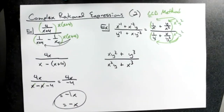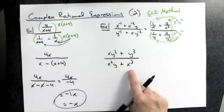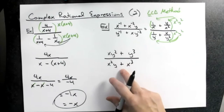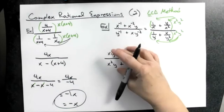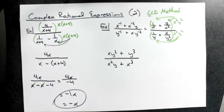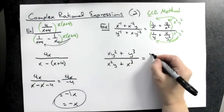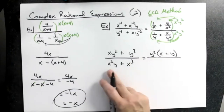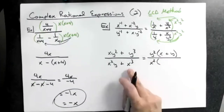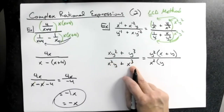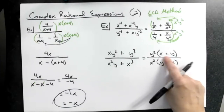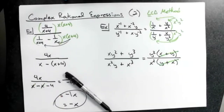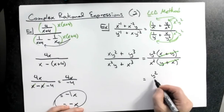Under normal circumstances we would probably stop there, but looking at this, I can factor out something from the top and something from the bottom. In the top, I can factor out y squared — leaving x in the first term and y in the second term. In the bottom, I can factor out x squared — leaving y in the first term and x in the second term. Even though those two binomials are written backwards — x plus y versus y plus x — we know that addition is commutative, so they are equivalent. They cross out, which gets me down to just y squared over x squared.